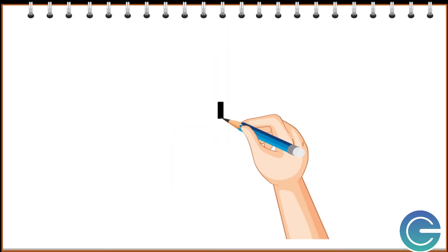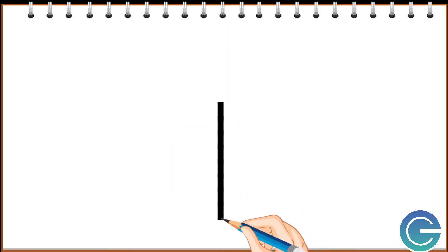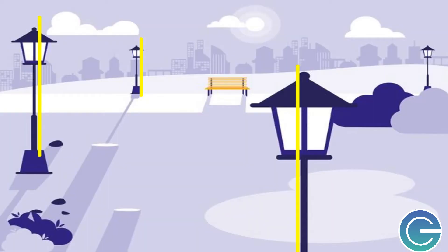This is the vertical line. It goes up and down or down to up. A vertical line looks like a post of a streetlight. The vertical line is also called the standing line.